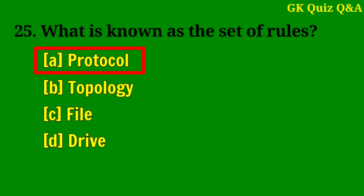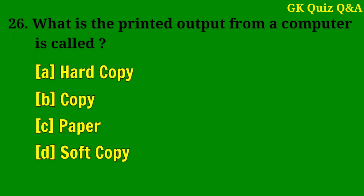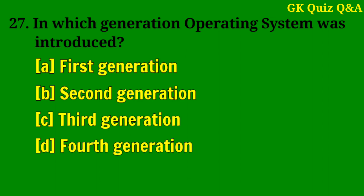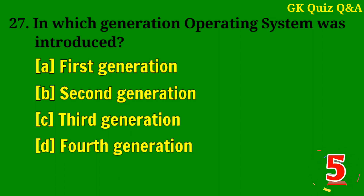What is the printed output from a computer called? Answer A: Hardcopy. In which generation was the operating system introduced? Answer C: Third generation.